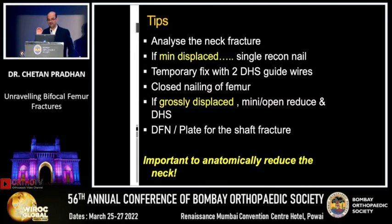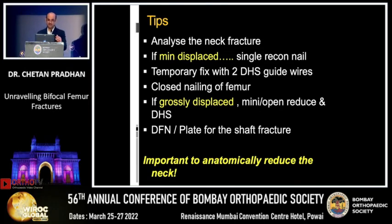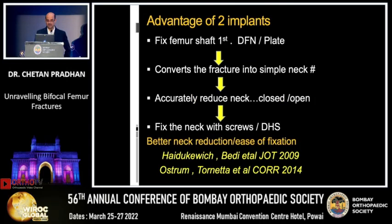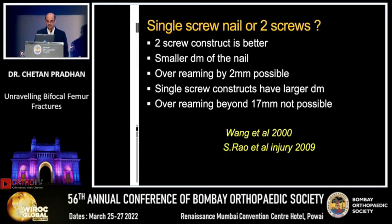Tips: analyze the neck fracture first. If it is minimally displaced, you can do a single reconstruction nail — temporarily fix it with two DHS guide wires, then do closed nailing of the femur. But if it is grossly displaced, you may need a minimal open reduction and two-implant assembly. Fix the shaft first, convert it into a standard neck femur, accurately reduce the neck either closed or open, and fix the neck with screws or DHS. A two-screw construct is better because the proximal diameter of the nail is smaller, and over-reaming by 2 mm is possible.